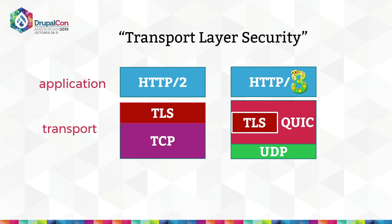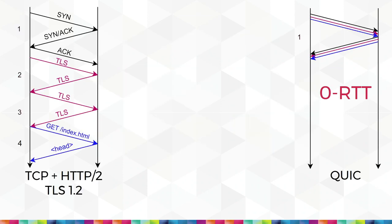Most articles on QUIC will show you two diagrams. On the left you see the TCP connection setup and they say it takes four round-trip times — four RTTs — back and forth between client and server to finally get some data back. Two of those four are because of TLS overhead. On the other side they place QUIC, and magically all of that can happen in one round-trip time. And because that doesn't sound impressive enough, the marketing department calls it zero RTT.